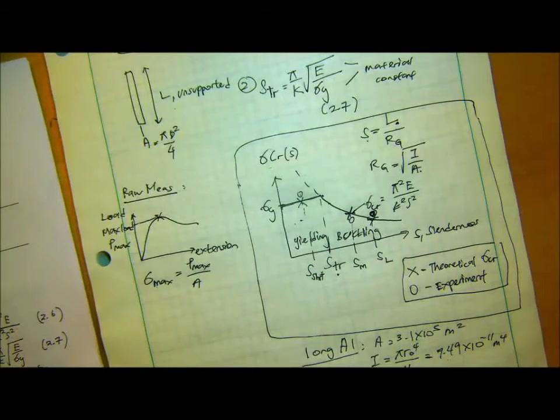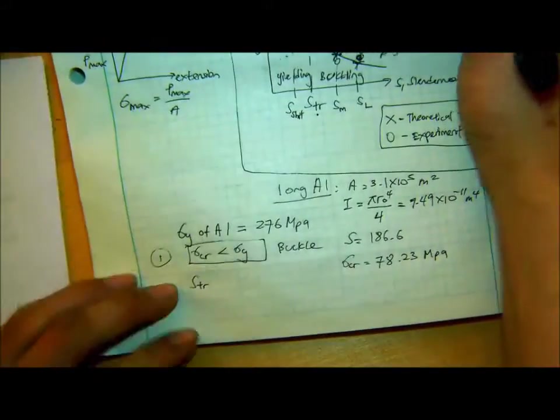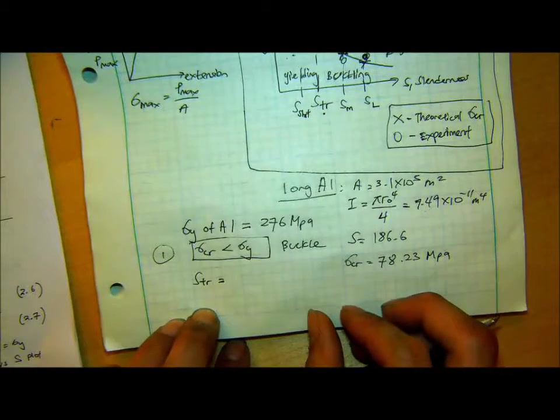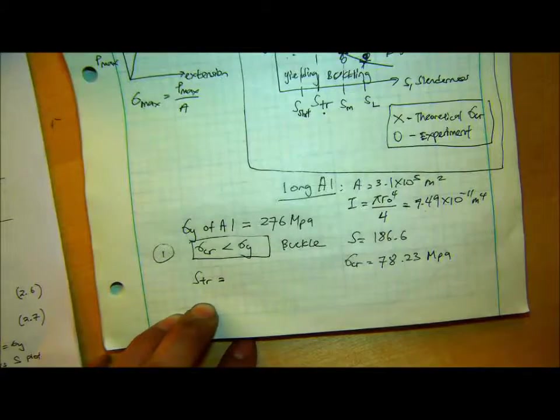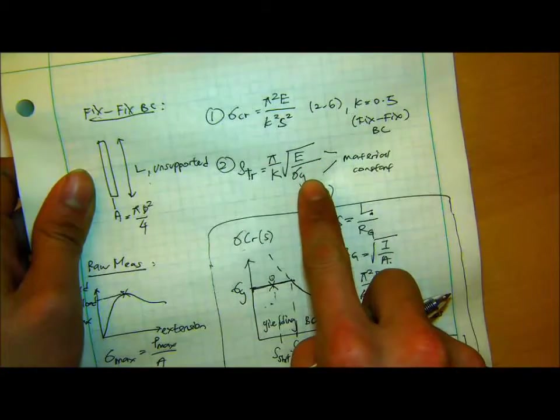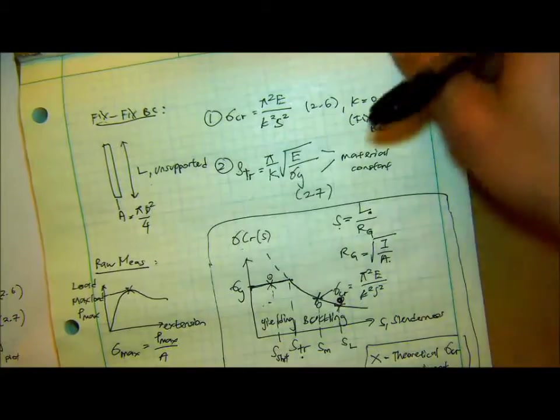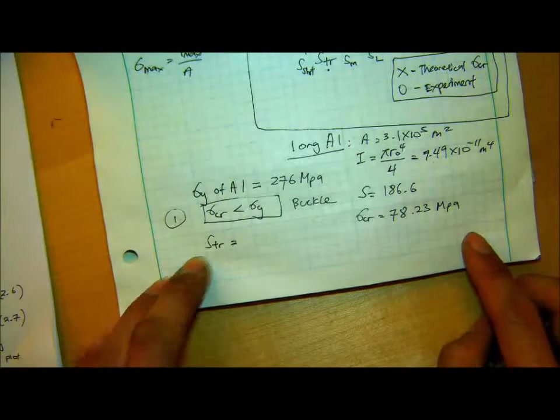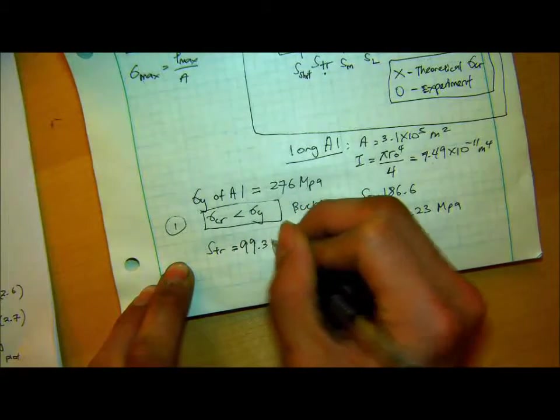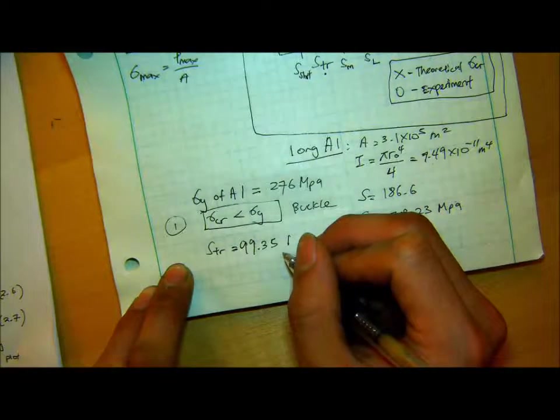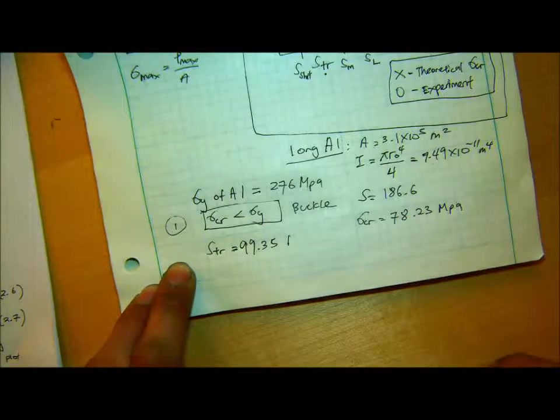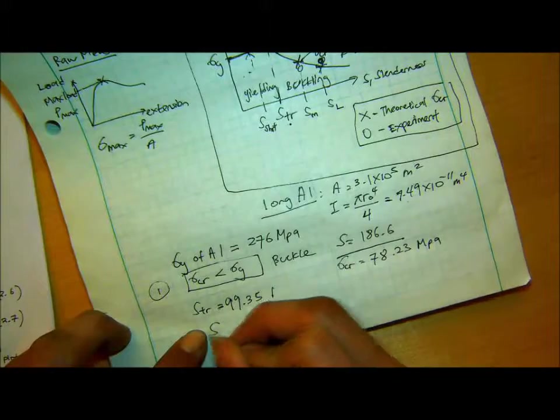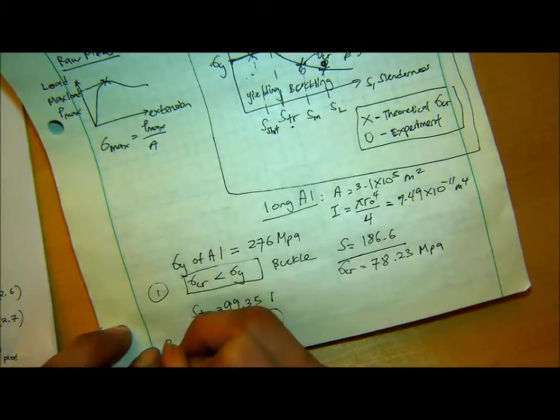And then another way is you find this transition S for this material. Because the transition S only depends on the material constant and the boundary condition. Whereas STR depends on E, sigma Y, and K. So the K is depending on what boundary condition we're imposing to our column. So the STR for our case for long aluminum fixed-fixed boundary condition is 99.35. There's no dimension. And our S here, this is the S of our column, is much bigger than STR. That's the second indication.